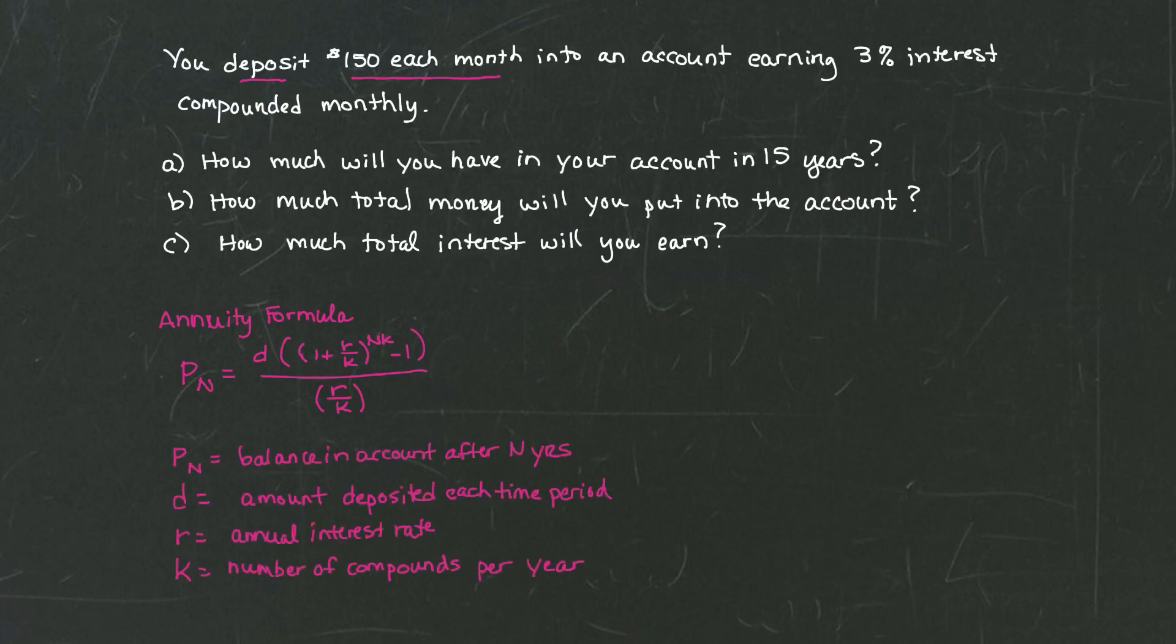Now what do all these letters mean again? Well, P sub n is the balance in the account after n years. D is the amount deposited each time period. R is the annual interest rate. K is the number of compounds per year. So how do we go about using this formula to solve our problem?